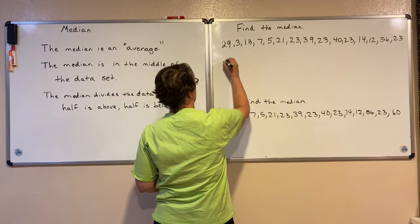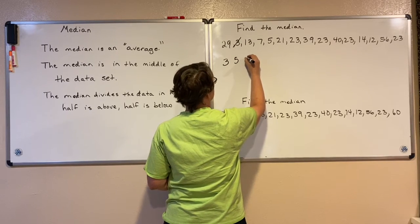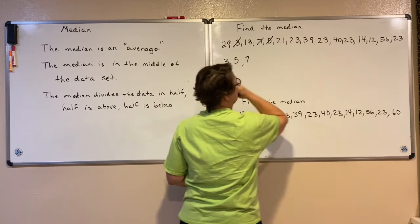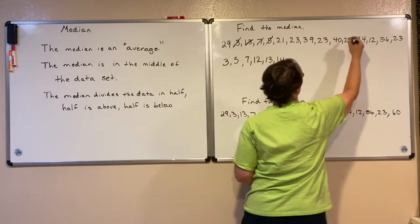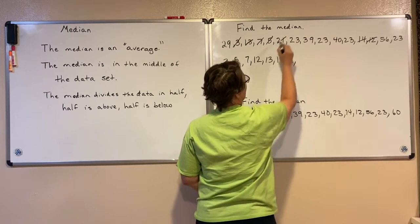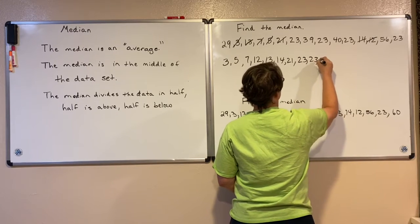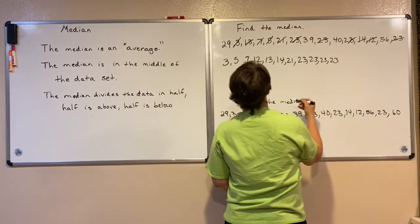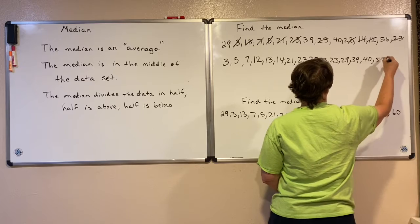So I'm going to go through and put this data set in order. We have 3, 5, 7, 3, 5, 7, then 12, 13, 14, then 21, 21, 23, 29, 39.